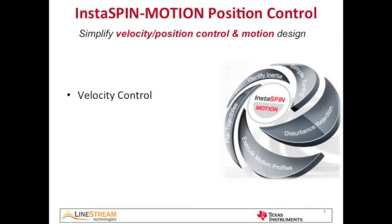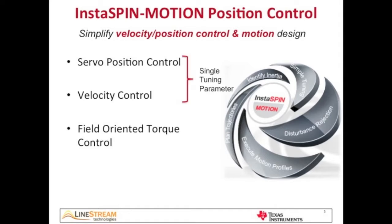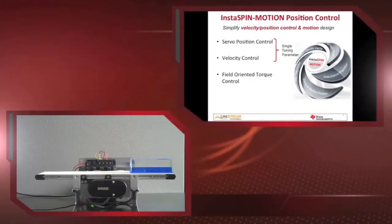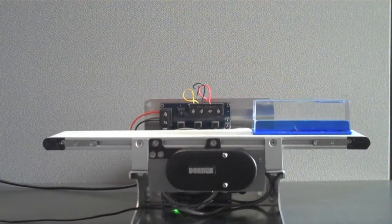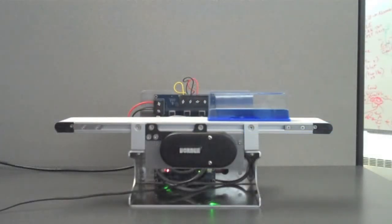Instaspin Motion offers velocity control with inner field-oriented torque control and an outer servo position loop that only requires a single tuning parameter for position plus velocity. With a single tuning parameter, Instaspin Motion was able to control the position of this conveyor over a speed range of 6 RPM to more than 3300 RPM.